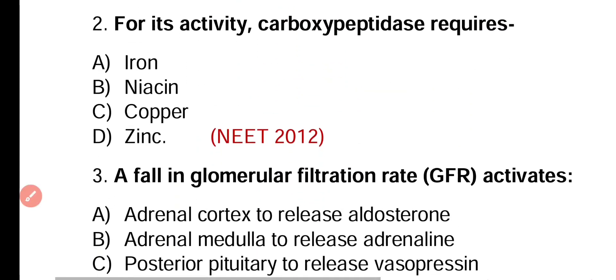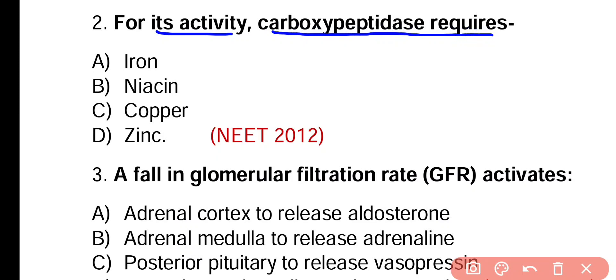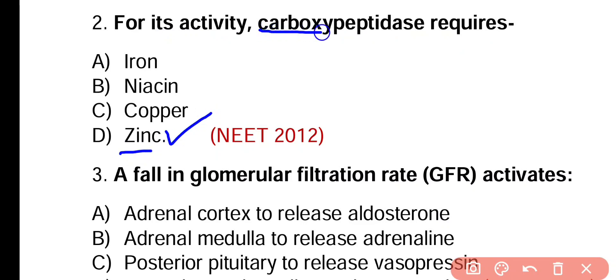Question number 2. For its activity, carboxypeptidase enzyme requires iron, niacin, copper, or zinc? Correct answer is option D. Zinc is a co-factor for enzyme carboxypeptidase for its functioning and activity.